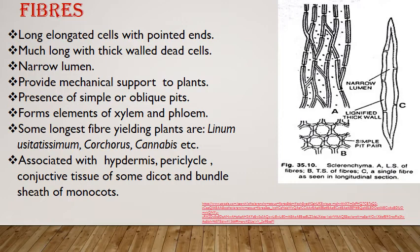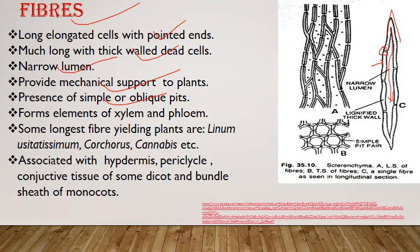Fibers are long elongated structures with tapering ends, thick walls, and a very narrow lumen. Pits may be simple or oblique. They are dead cells providing mechanical support. They are associated with xylem and phloem to form xylem fibers and phloem fibers. Some plants yield long fibers — for example Linum usitatissimum, Corchorus (jute), and Cannabis.